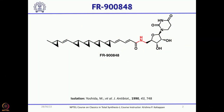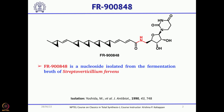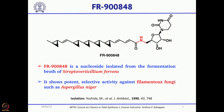FR900848 is a very interesting natural product isolated and reported in 1990 by Yoshida and his group. If you look at this molecule you can see there are 5 cyclopropanes. It is indeed a complex natural product — a nucleoside having a long chain with 5 cyclopropanes and 3 double bonds. It was isolated from the fermentation growth of Streptoverticillium fervens and showed exceptional activity against filamentous fungi such as Aspergillus niger.